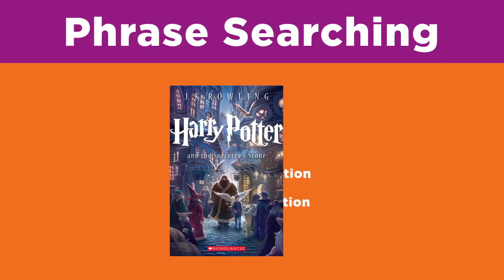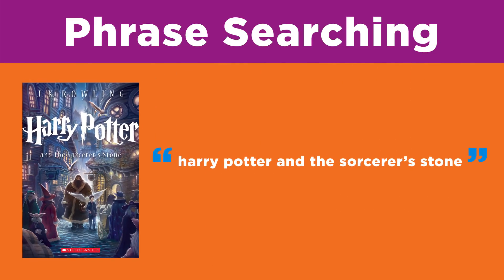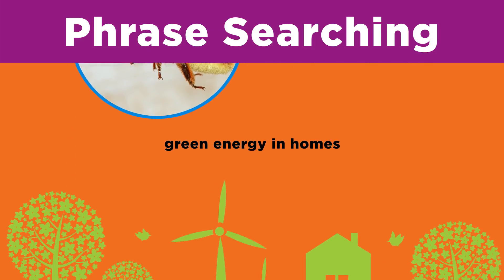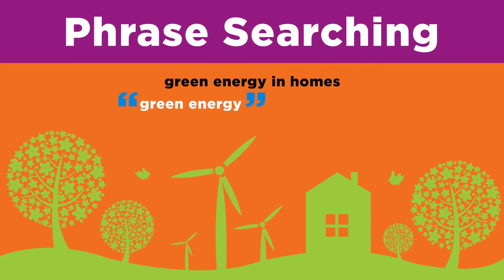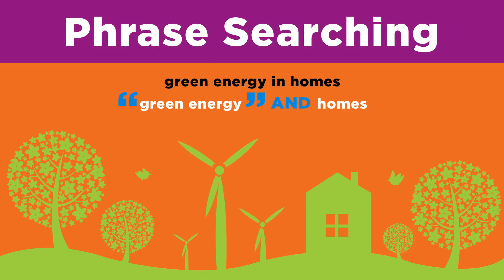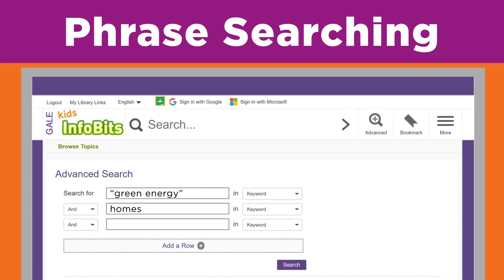Sometimes titles have many words in them, like 'Harry Potter and the Sorcerer's Stone.' Using quotation marks will yield results that are only about that specific title. If you're searching for information about red mason bees, put the entire phrase in quotation marks so you only get results about that type of bee. For a topic like green energy in homes, put 'green energy' in quotation marks along with the boolean operator AND followed by 'homes' to find results about houses that use renewable energy sources. Using the advanced search option of your library database or search engine, your search string might look like this.